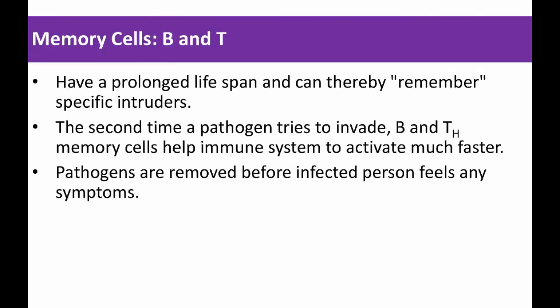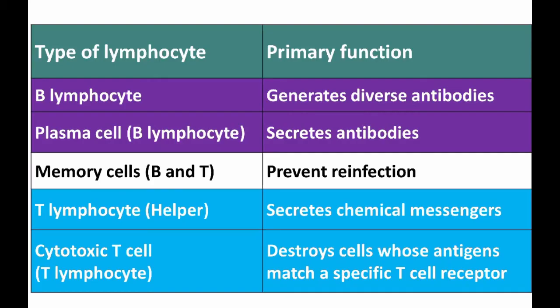This form of our immune system — the acquired immune system — is capable of remembering the pathogens we've encountered in the past. Because of that, our secondary response to an infection is much, much faster. This slide shows a summary of the different kinds of lymphocytes and their functions. B lymphocytes can differentiate into memory B cells as well as plasma cells that secrete antibodies. T lymphocytes include helper T cells, which produce cytokines, and cytotoxic T cells, which are the destroyers.